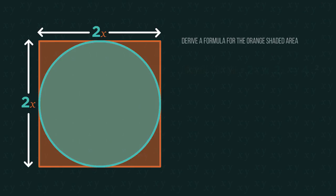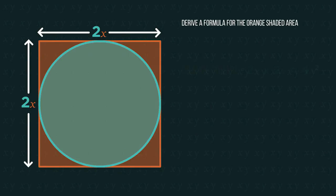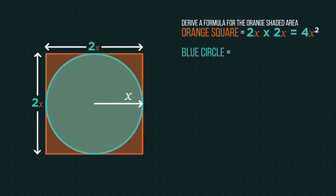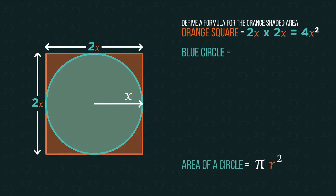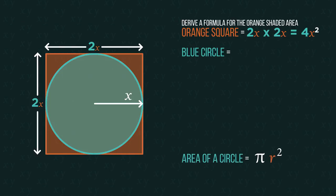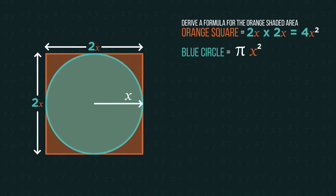So let's jump straight in. What is the area of the orange square? As a square it must be 4x squared and the area of the blue circle has a radius of x and using the area of the circle is pi radius squared it must be pi x squared.